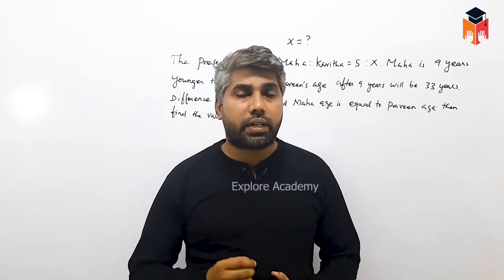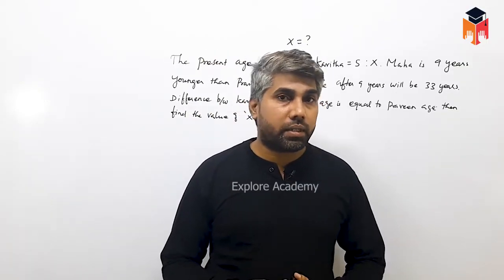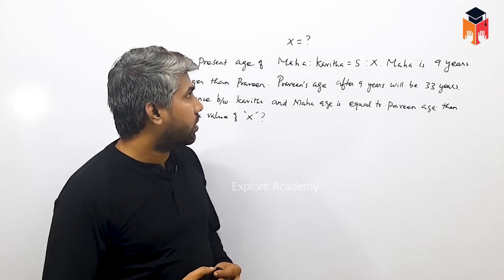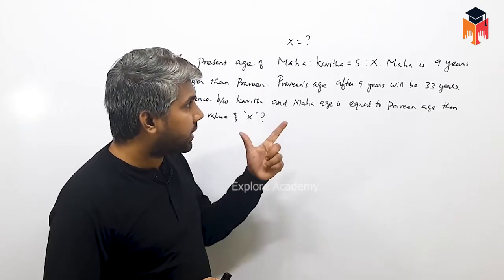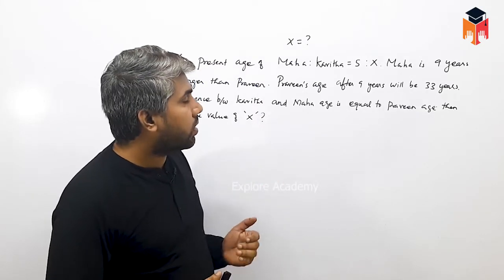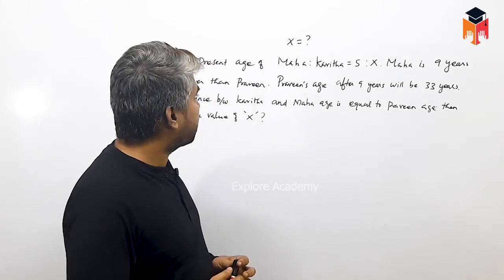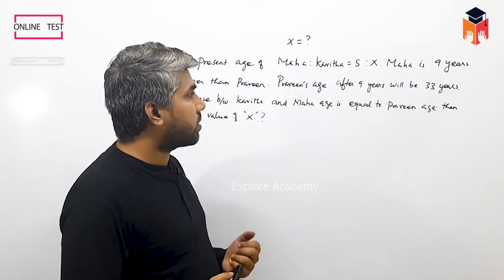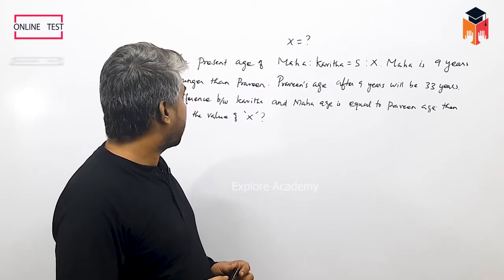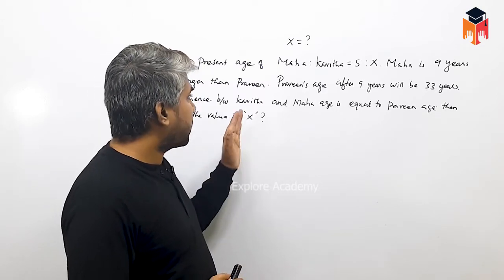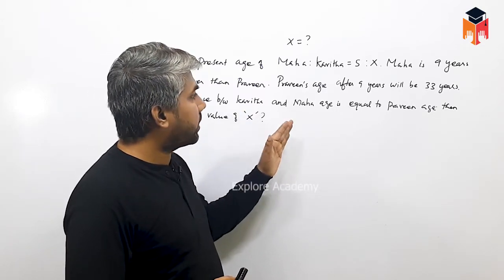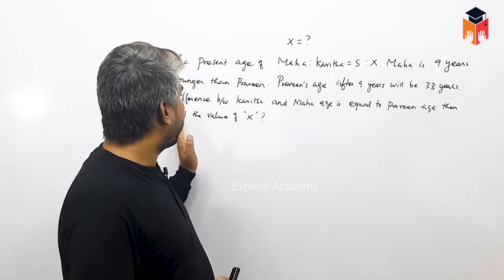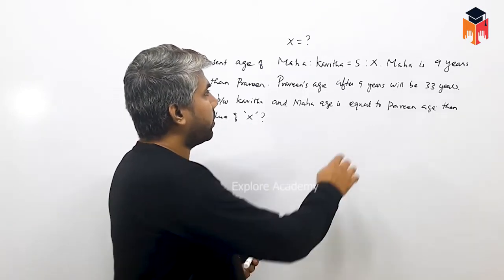Dear students, the present age of Maga and Kavitha is in ratio 5 to x. Maga is 9 years younger than Praveen. Praveen's age after 9 years will be 33 years. The difference between Kavitha and Maga's age is equal to Praveen's age. Find the value of x.